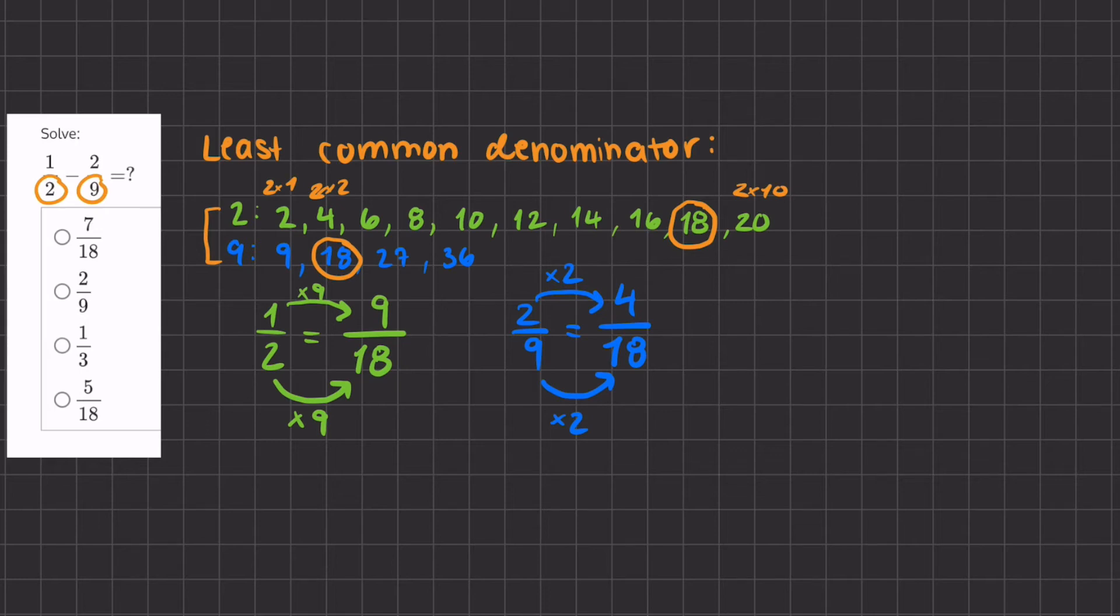Now that we have a common denominator for both of the fractions, we can subtract them. We have 9 over 18 minus 4 over 18. Now our common denominator stays the same, we don't subtract them. And we take our numerators and we subtract those.